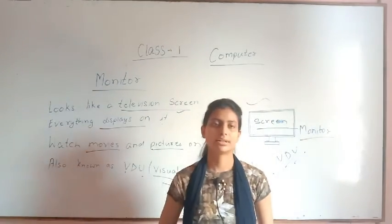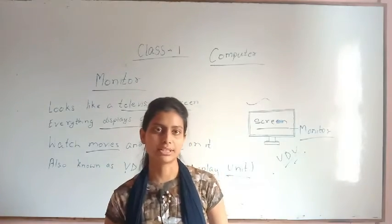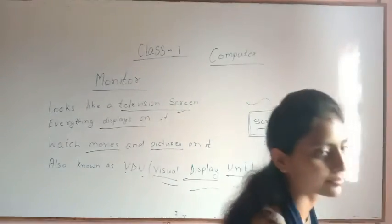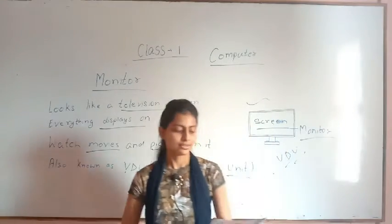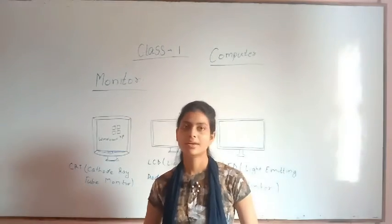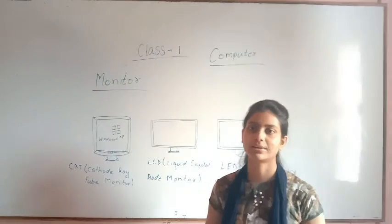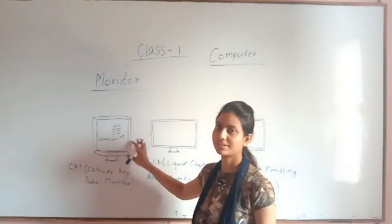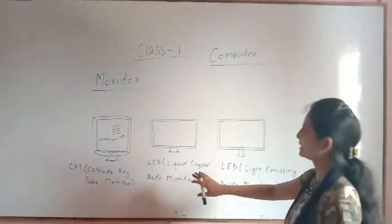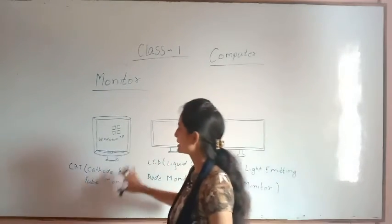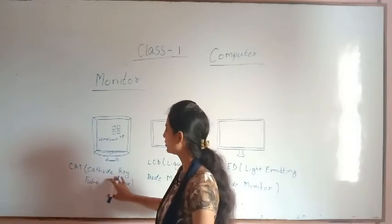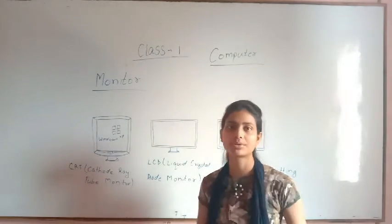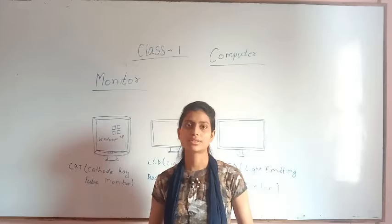Now we will learn the three types of monitors. There are three types of monitors. The first type is CRT — Cathode Ray Tube monitor. When the computer was first made, these types of monitors were used.